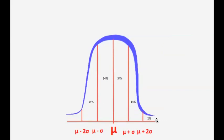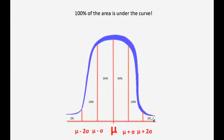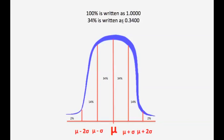Above two standard deviations, roughly 2% of the data are above two standard deviations from the mean, and another 2% are below two standard deviations from the mean. Keep in mind that 100% of the area is under the curve, and 100% is often written as 1.0000. In mathematics and statistics, we may talk percents, but most of the work we do will involve converting to a decimal equivalent. For instance, 34% is written as 0.34, and 14% is written as 0.14.